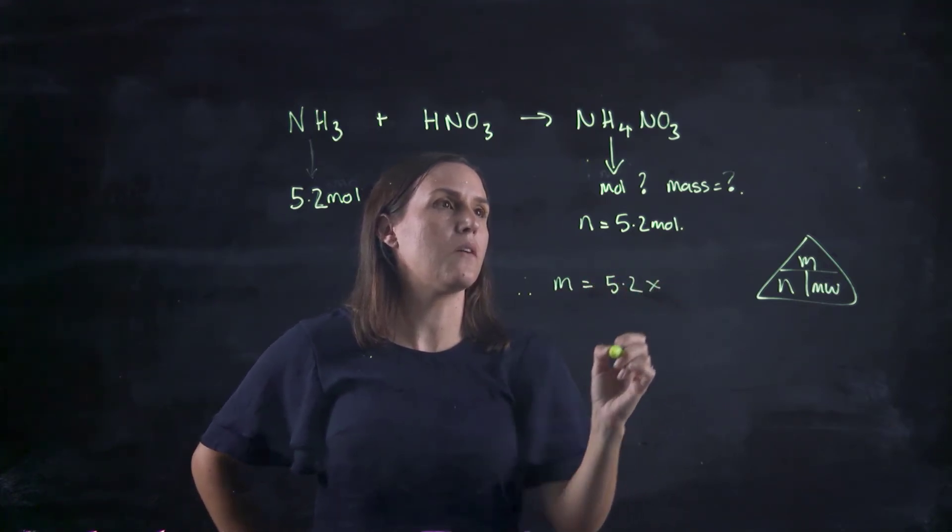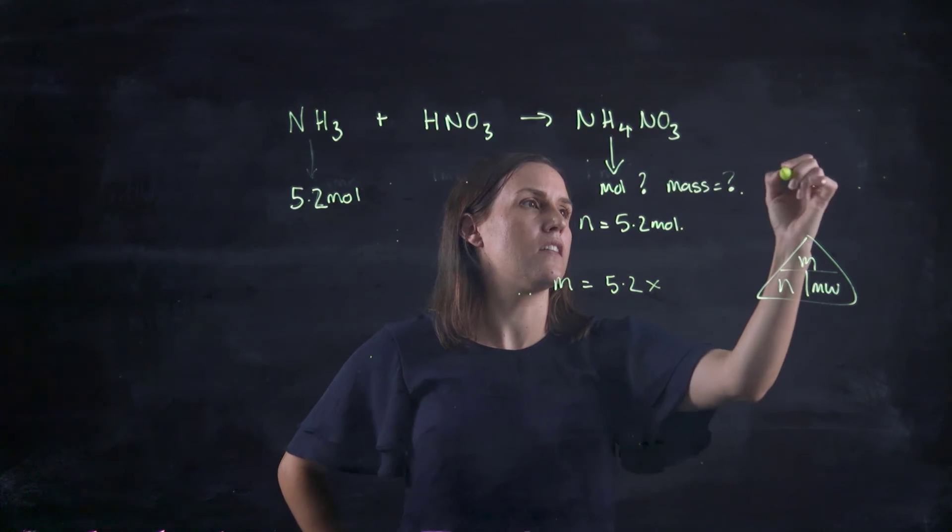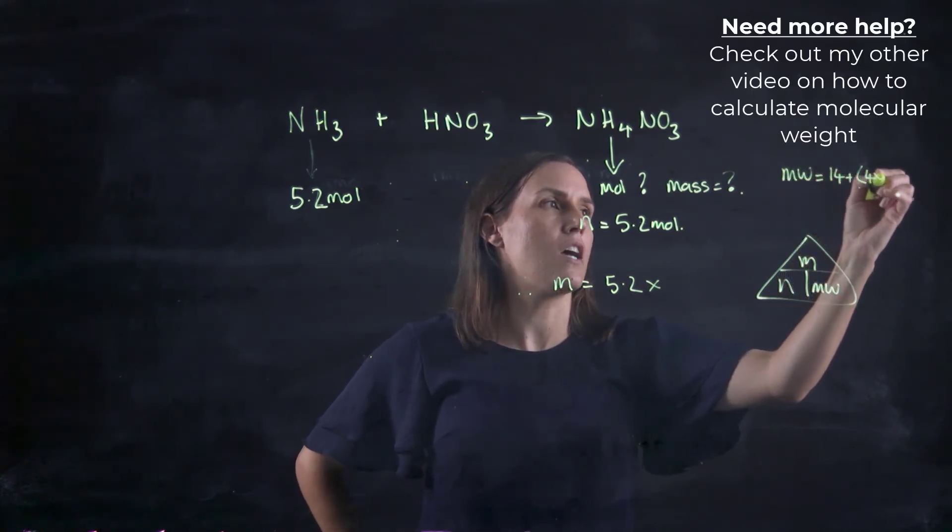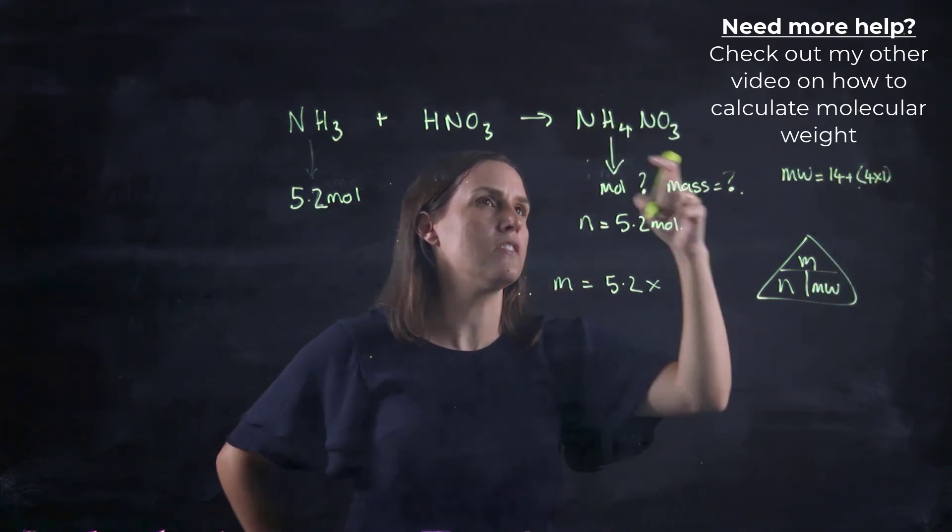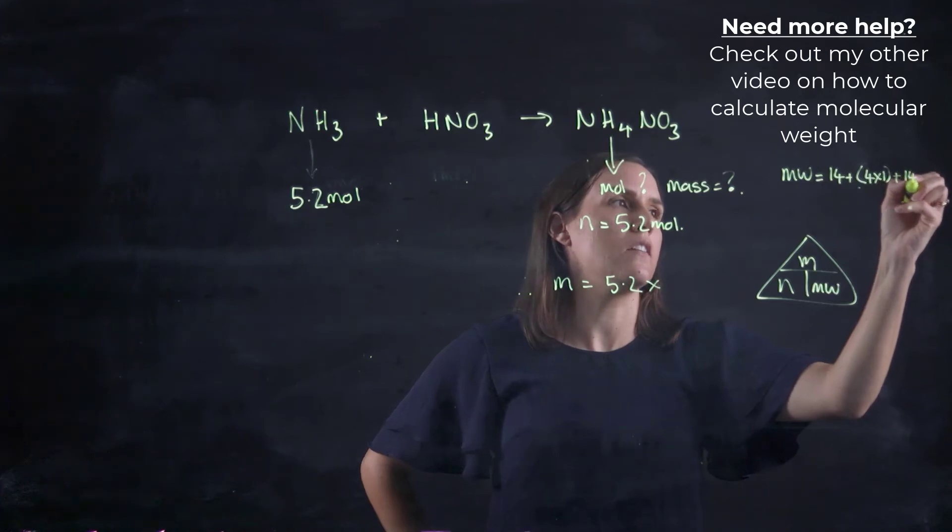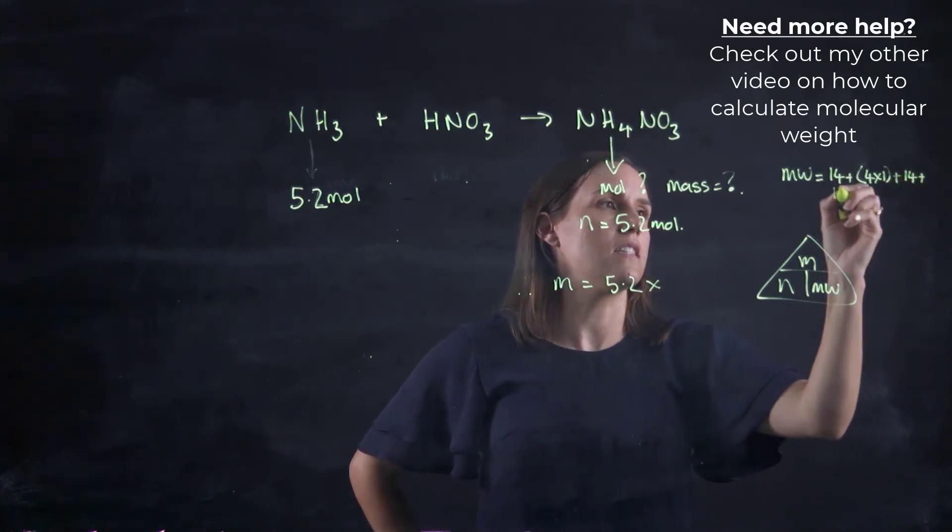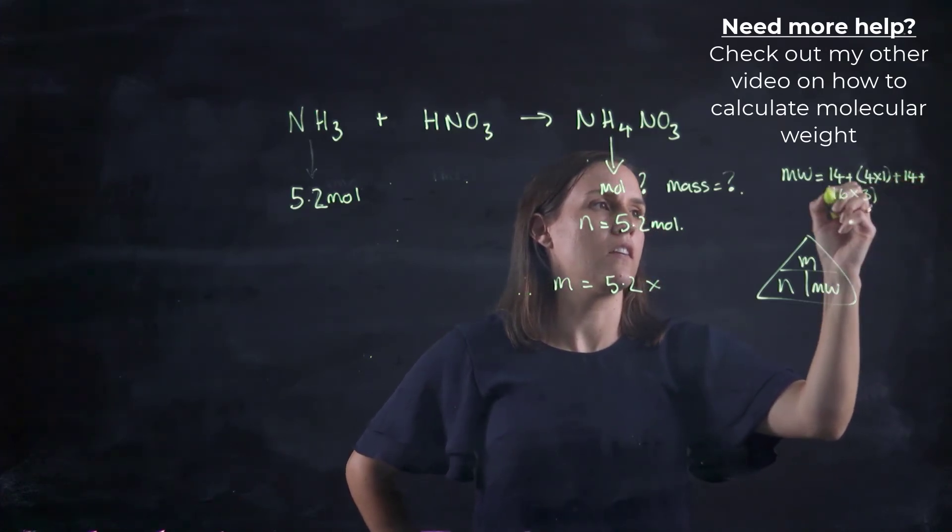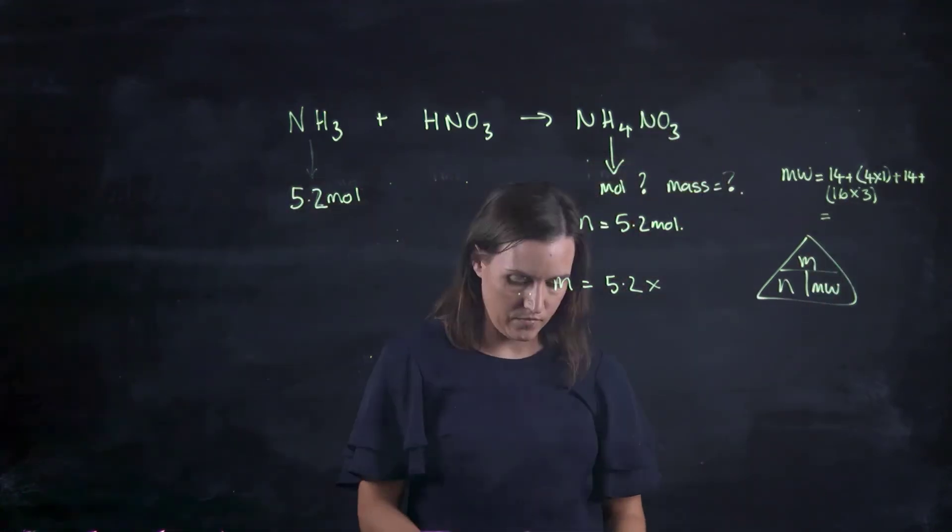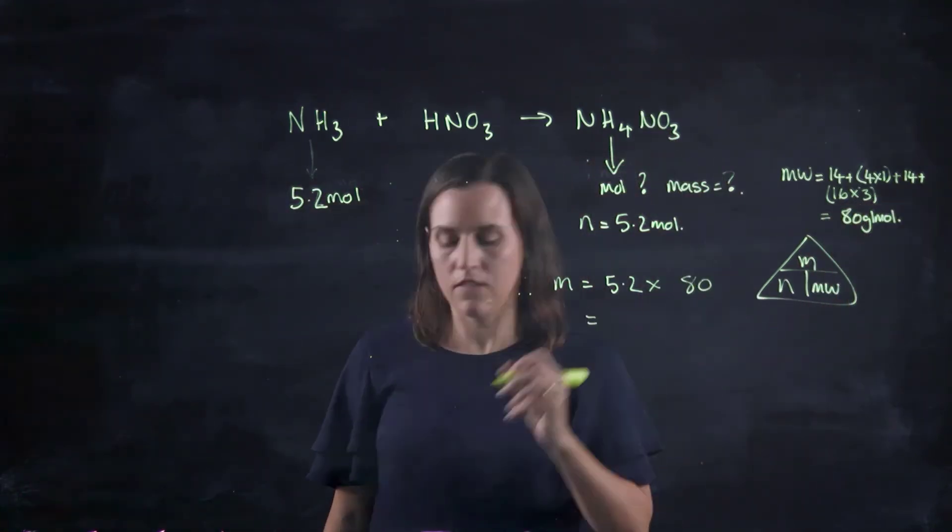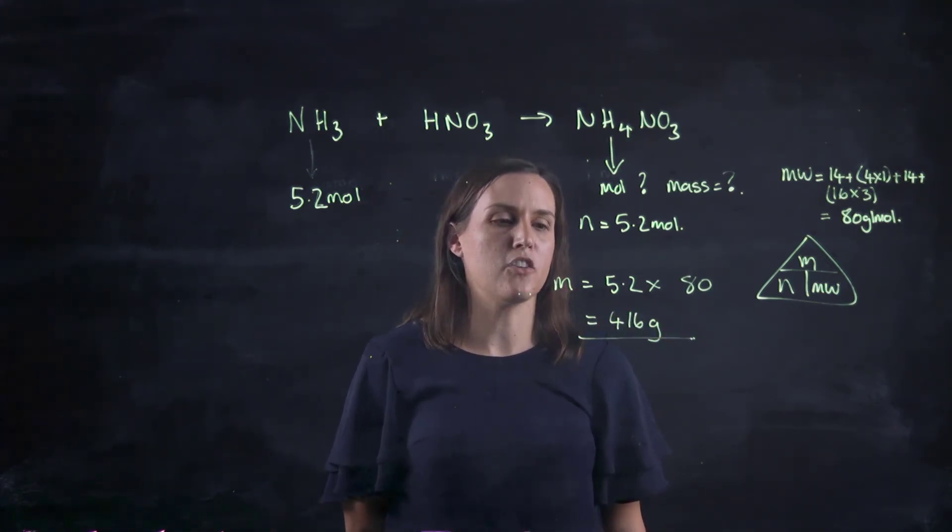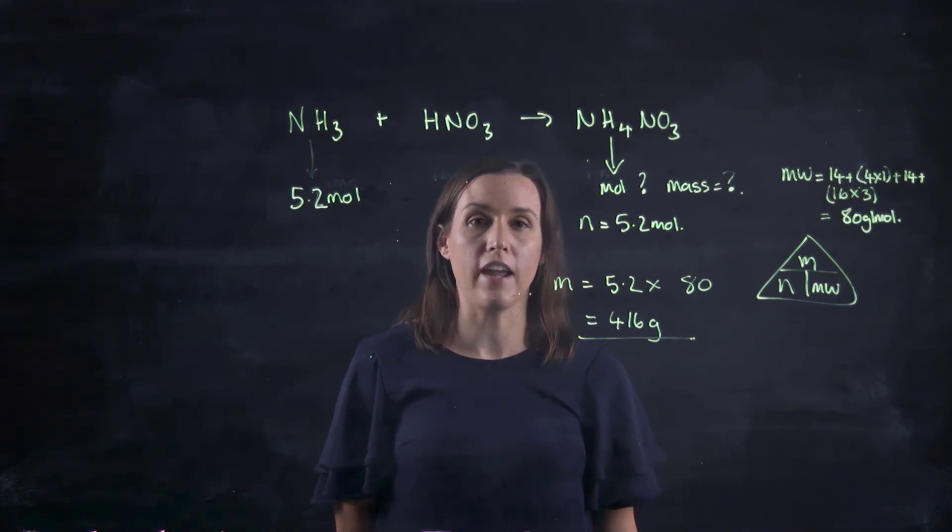So the number of moles is given to us. And the molecular weight's not. So let's work it out. The molecular weight equals 14 + 4×1 for the four hydrogens, plus 14 + 16×3 for the oxygens. So this one gives us 80 grams per mole for the molecular weight. So it would be 416 grams.